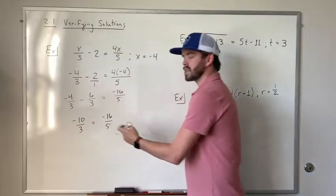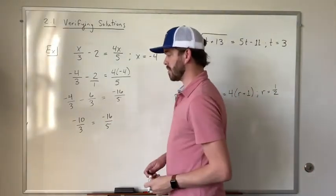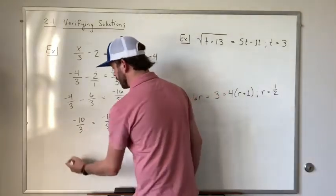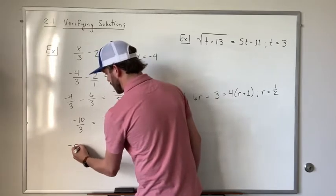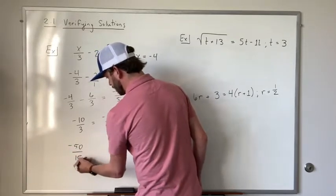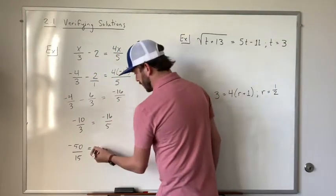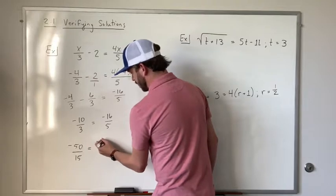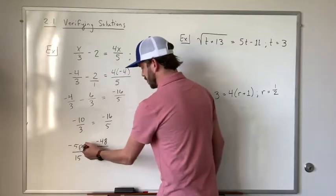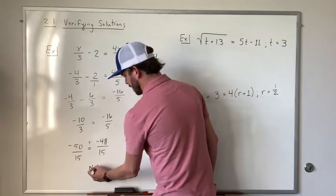Now in order to see if these two are equal or not, we have to find a common denominator. So the common denominator for 3 and 5 is 15. We're going to multiply this side by 5 over 5. That's going to give us negative 50 over 15. And then on this side we're going to multiply both of them by 3 over 3. That's going to give us negative 48 over 15. So this is not a solution.